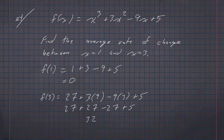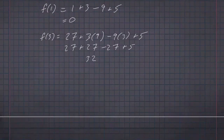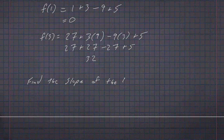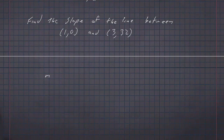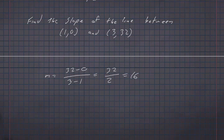So the average rate of change between x equals 1 and x equals 3 is the same thing as finding the slope of the line between the points (1, 0) and (3, 32). Taking a problem that we didn't know how to deal with and turning it into one that we've been doing for quite some time. The slope is y2 minus y1 over x2 minus x1: 32 minus 0 over 3 minus 1, which is 32 over 2, which is 16. The average rate of change in that range is 16.